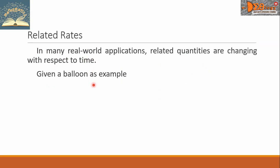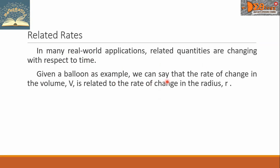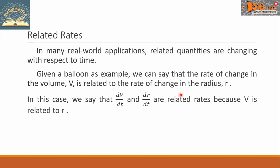Given a balloon as an example, we can say that the rate of change in the volume V is related to the rate of change in the radius R. In this case, we say that the rate of change of the volume with respect to time, that is dV/dt, and the rate of change of the radius with respect to time, that is dr/dt, are related rates, because V is related to R.